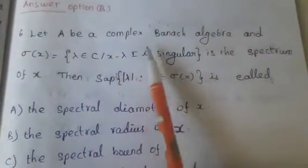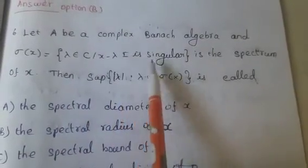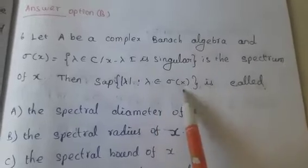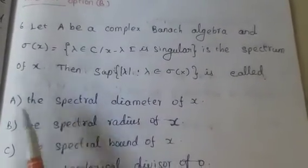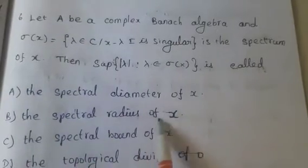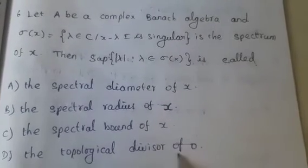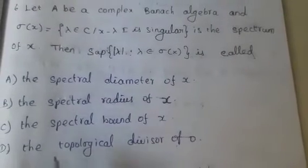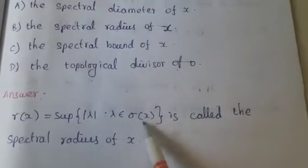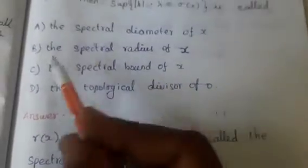Sixth question: Let A be a complex Banach algebra and sigma(X) equal to lambda belonging to C such that X minus lambda I is singular, which is the spectrum of X. Then supremum of modulus of lambda, for lambda belonging to sigma(X), is called — Absent A, spectral diameter of X; Absent B, spectral radius of X; Absent C, spectral bound of X; Absent D, topological divisor of 0. R(X) equals supremum of modulus lambda for lambda belonging to sigma(X) is called spectral radius of X. Absent B is the correct answer.